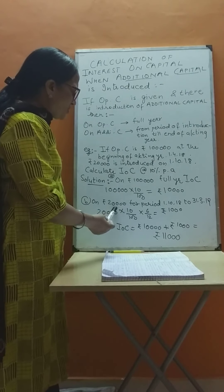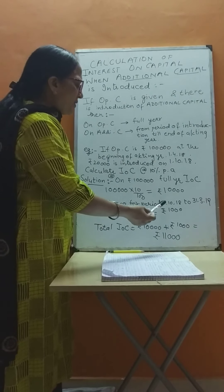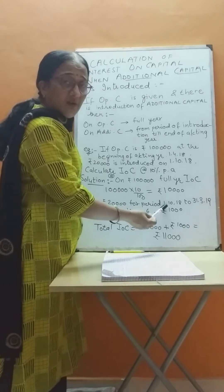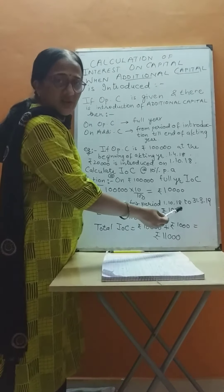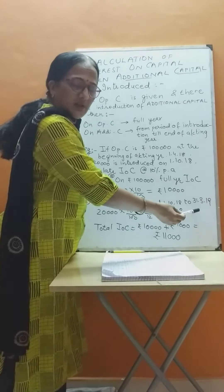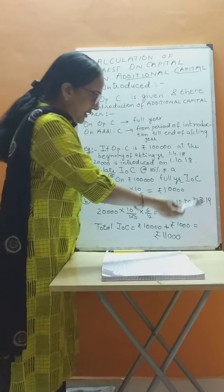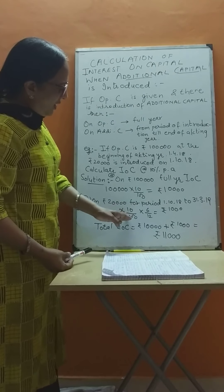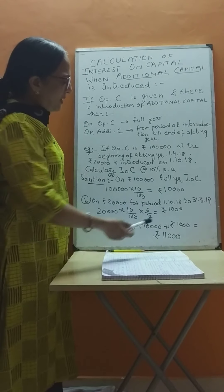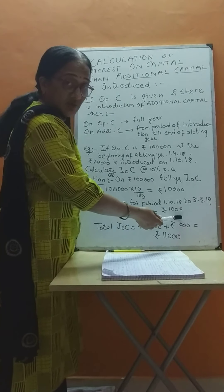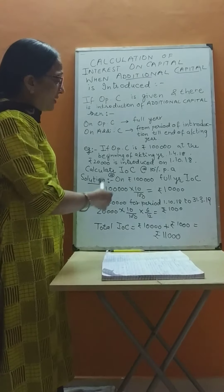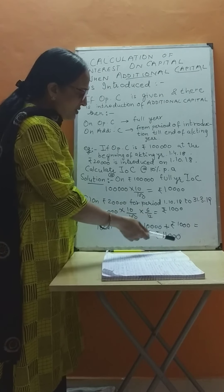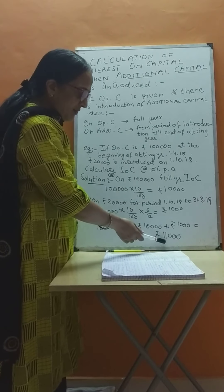As per the question, ₹20,000 was introduced on 1st October 2018. So interest on capital for ₹20,000 will be calculated from 1st October 2018 to 31st March 2019, which is 6 months. The calculation is: ₹20,000 × 10/100 × 6/12 = ₹1,000. Therefore, the total interest on capital is ₹10,000 + ₹1,000 = ₹11,000.